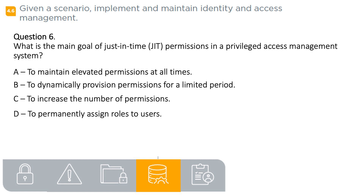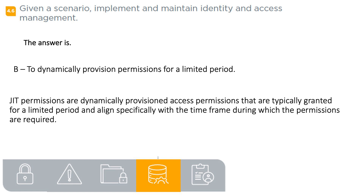Question 6. What is the main goal of just-in-time (JIT) permissions in a privileged access management system? A. To maintain elevated permissions at all times. B. To dynamically provision permissions for a limited period. C. To increase the number of permissions. D. To permanently assign roles to users. The answer is B: to dynamically provision permissions for a limited period. JIT permissions are dynamically provisioned access permissions that are typically granted for a limited period and align specifically with the time frame during which the permissions are required.